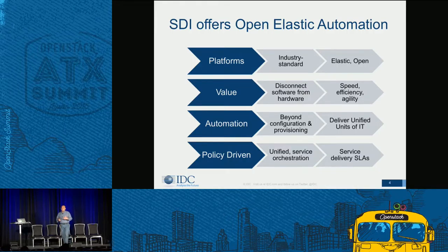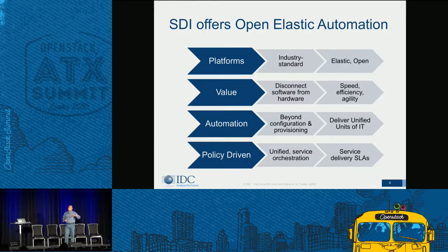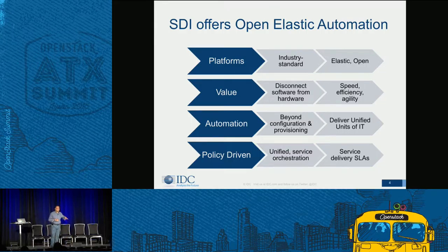From a platform perspective, people want industry standards — elastic and open. From a value perspective, they want to decouple software from hardware. It's all about speed, efficiency, agility. Automation is top of everyone's mind — they want to go beyond just provisioning and configuration to an ongoing management paradigm that is totally different. Finally, they want to deliver unified units of IT without silos of compute, network, and storage, driven by policy-based unified service level orchestration.